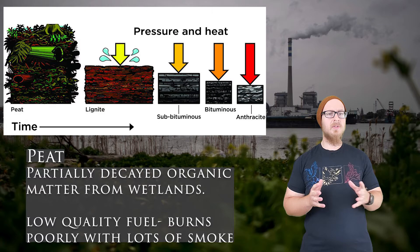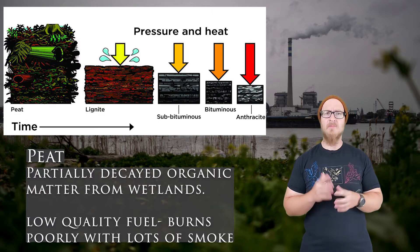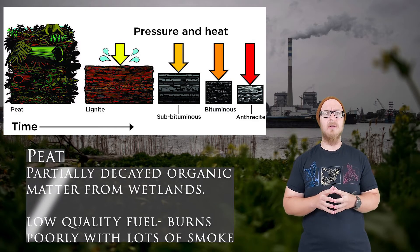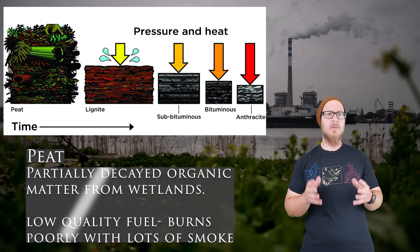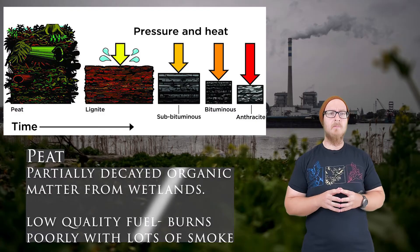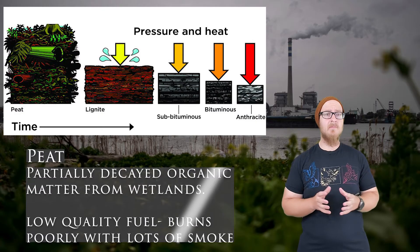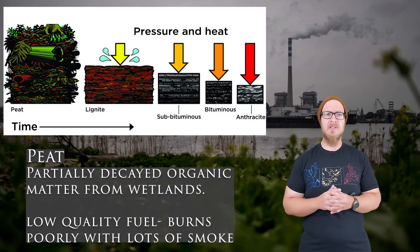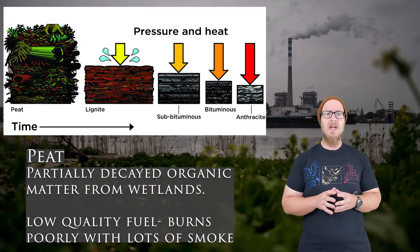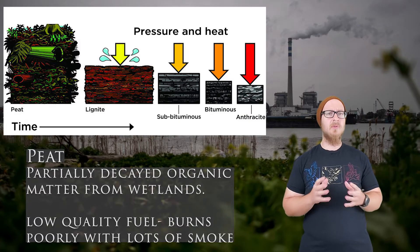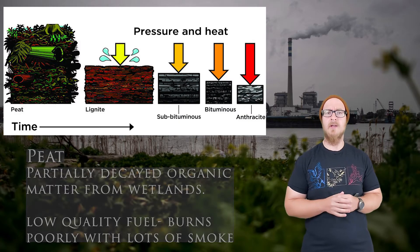Peat is composed of dead and partially decaying organic matter that usually comes from some sort of wetland. Peat can be burned for fuel, but it's not particularly energy dense and it produces a lot of smoke, so it's a really poor source of energy.